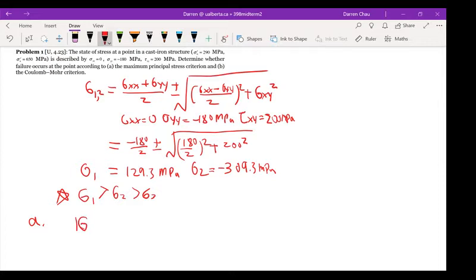So sigma 1, absolute value of sigma 1 has to be smaller than the ultimate stress in order to not fail.